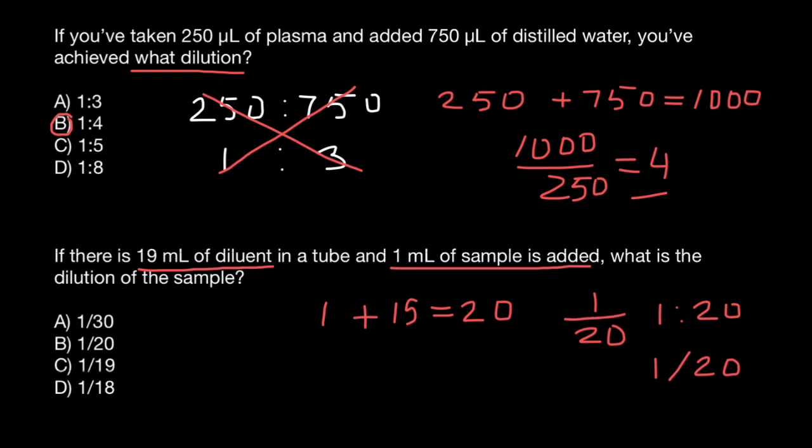So just remember, on top we have the volume of sample, and on the bottom, volume of the solution. Volume of solution is made by volume of the sample plus diluent. So as you see, the correct answer is B. Here we got 20-fold dilution of the sample.